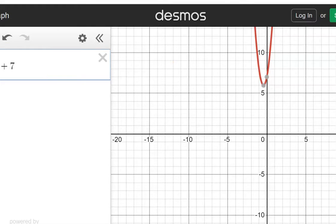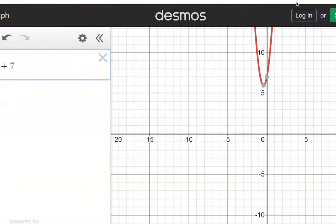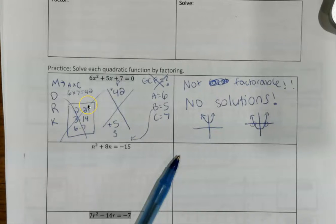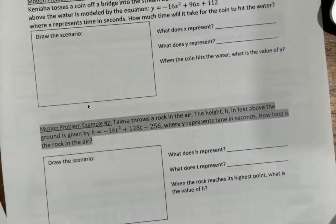Looking at Desmos, I put in the equation 6x squared plus 5x plus 7, and you'll see that it does not touch the x-axis. The x-axis is here, and the lowest point of that quadratic is above the x-axis. So, no solution. This is not factorable. Sorry, tricked you, but at least you got some practice at finding factors. Now, let's go have some fun on the very last page with the word problems.